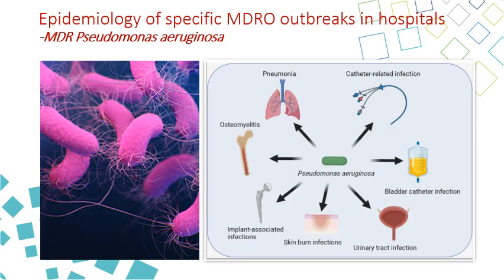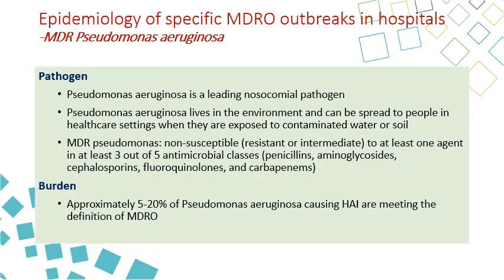The next MDRO is MDR Pseudomonas aeruginosa. Pseudomonas aeruginosa is a leading cause for nosocomial infections and probably it is the most common infection encountered as HAI. Pseudomonas aeruginosa lives in the environment, so it can be seen on water or soil, on surfaces and objects. MDR Pseudomonas is defined as an organism that is not susceptible — which means both resistant or intermediate — to one of the agents in three to five antimicrobial classes, including penicillins, aminoglycosides, cephalosporins, fluoroquinolones, and carbapenems. About five to twenty percent of Pseudomonas are meeting the definition of MDRO and causing infection.